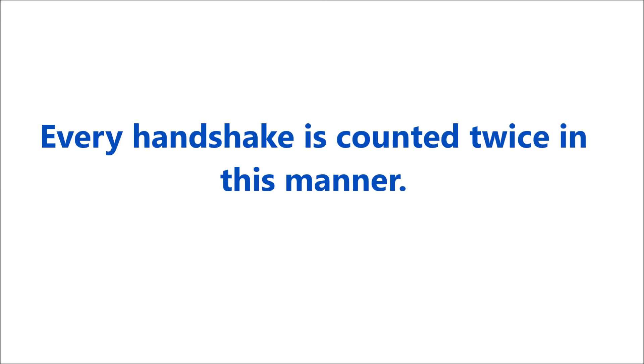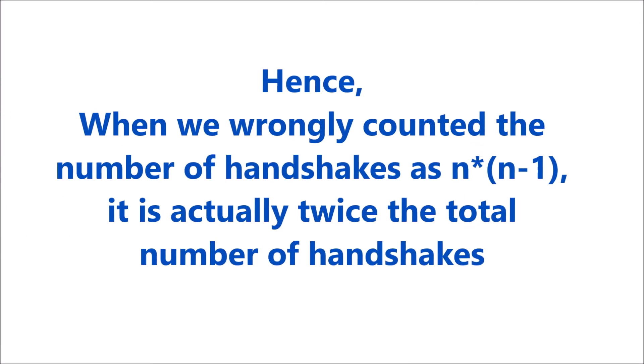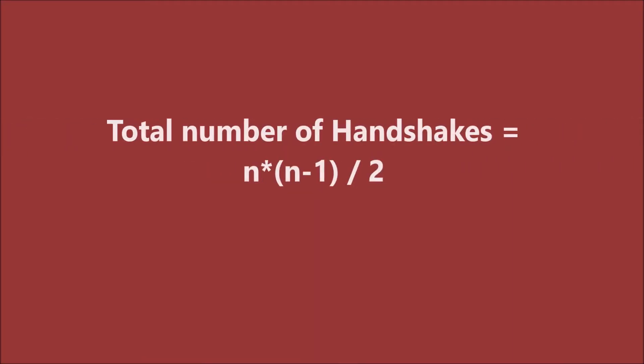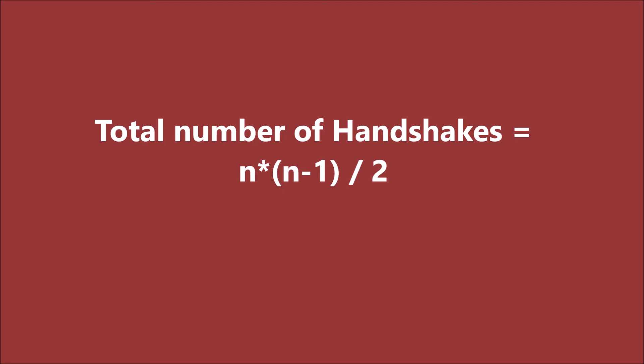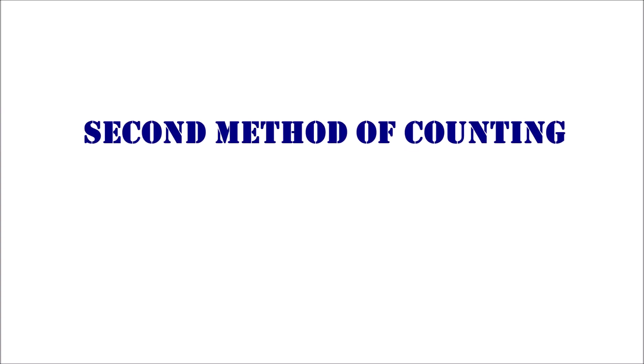That's why every handshake is counted twice when we use n times n-1. So n times n-1 is actually twice the original number of handshakes. That means 2 times the number of handshakes equals n times n-1, and the number of handshakes is n times n-1 divided by 2. Now we will see a second way to count the number of handshakes.